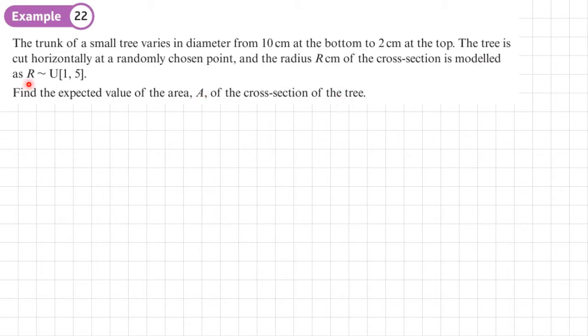Now we need to be careful in this question because it might be tempting to work out the expected radius. But the question says the expected value of the area. So that's what we need to work out. We don't work out the expected radius and then square it and times it by pi. That would be incorrect. We're asking for the expected area, so that's what we're going to find out.